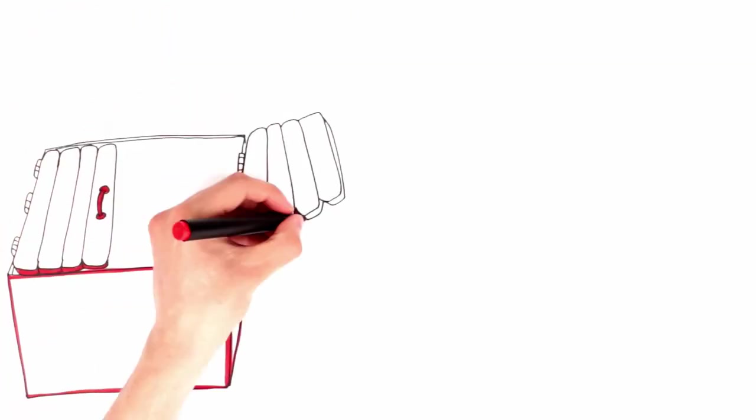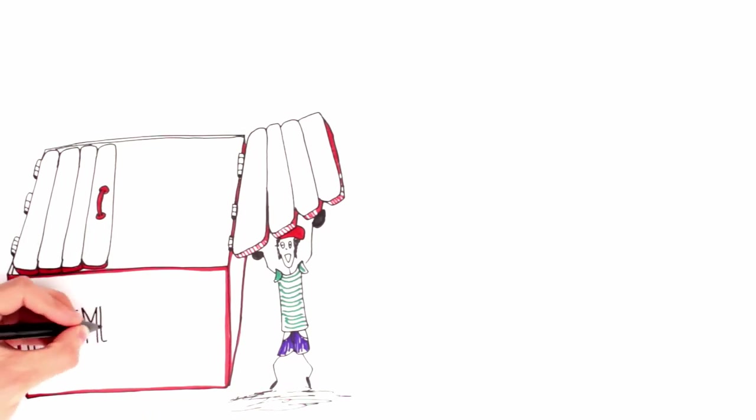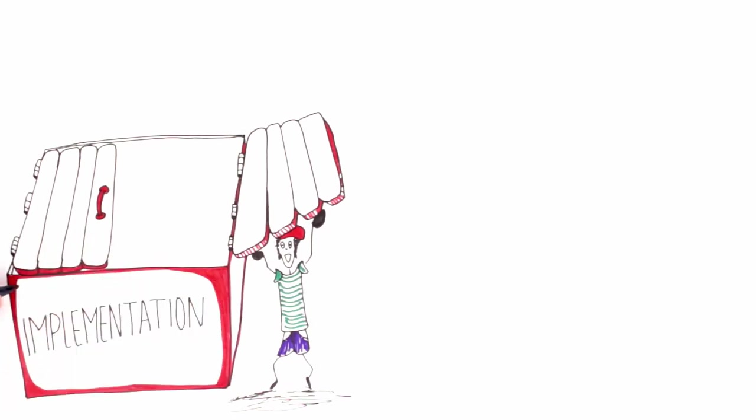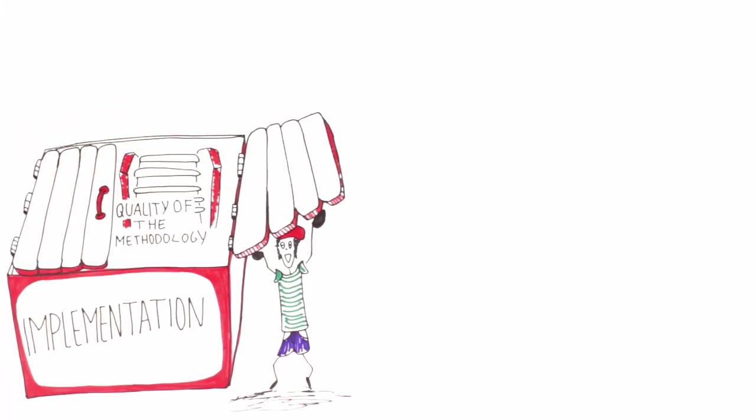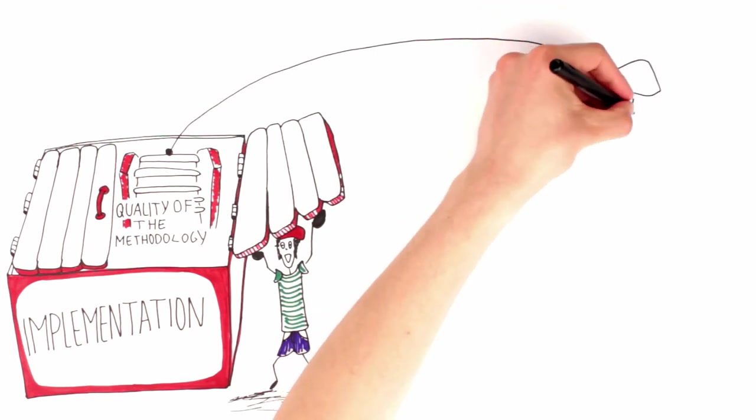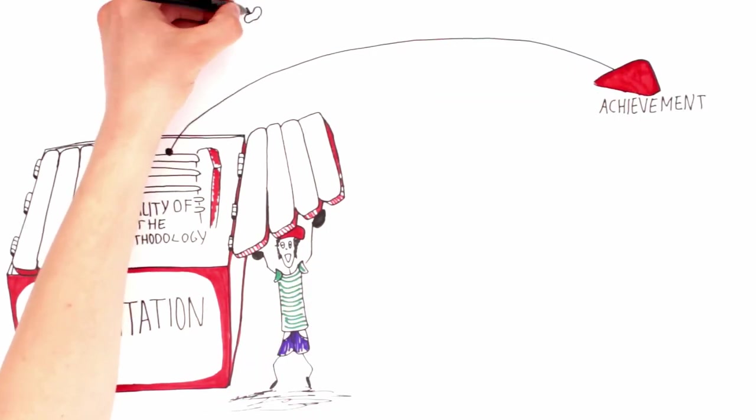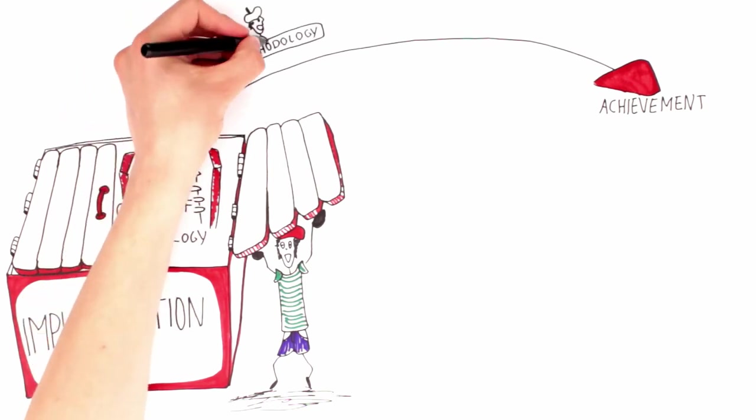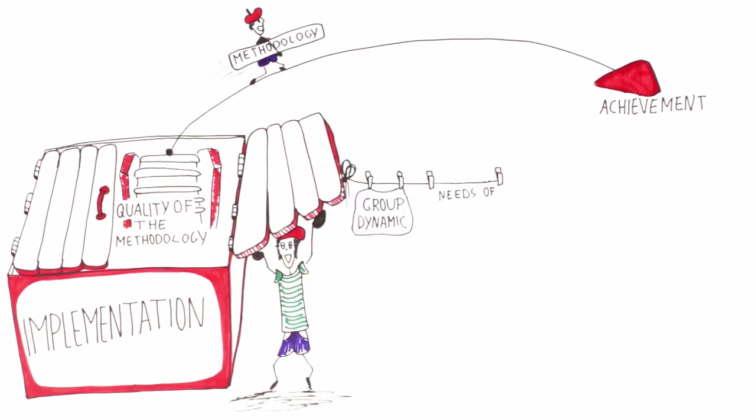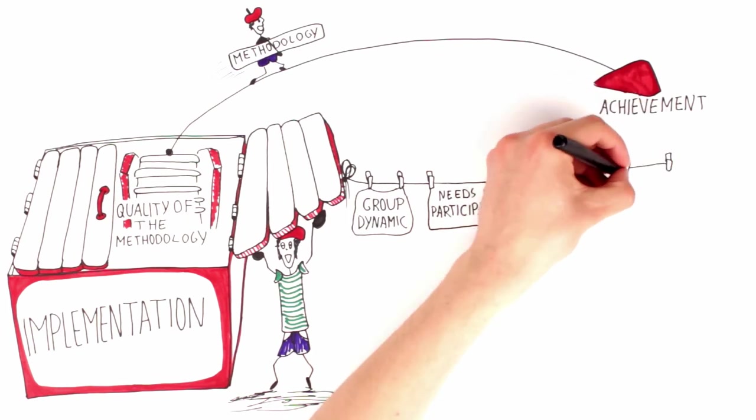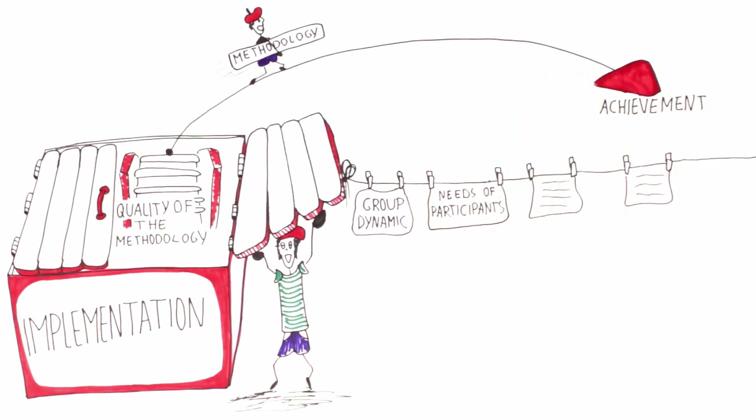When it comes to implementation, the main focus is on the quality of the methodology. The project should clearly identify how a certain chosen methodology can lead to the achievement of educational objectives and how it corresponds to the participants' profiles and specific learning needs. It's essential that the activity program is built around educational principles, considering group dynamics, balance between methodology and diverse learning preferences, and key principles of non-formal learning.